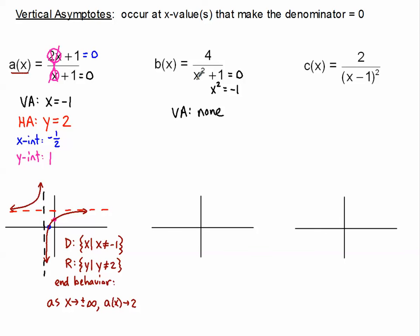Any number we plug in for x, when we square it, would be 0 or positive. And if we add 1, we'll definitely be positive — so there's no way to equal 0 here, and no restrictions for x. The horizontal asymptote is y equals 0, and I'll explain that in the next tutorial. It kind of makes sense why there are no x-intercepts, since we've covered the x-axis with our asymptote.